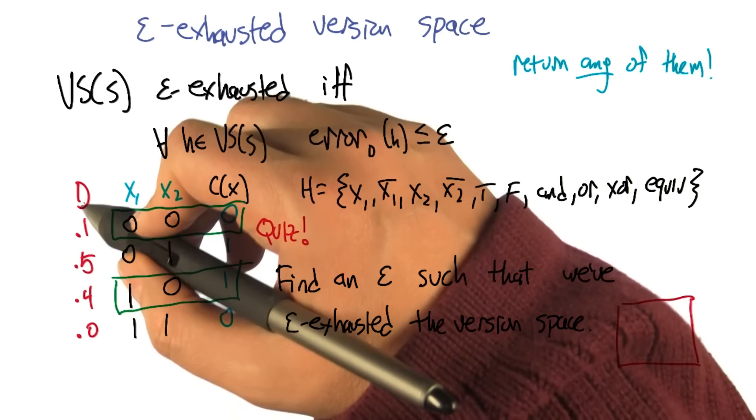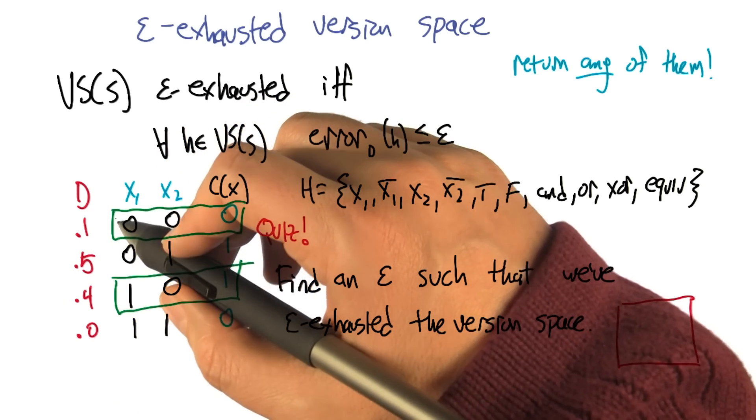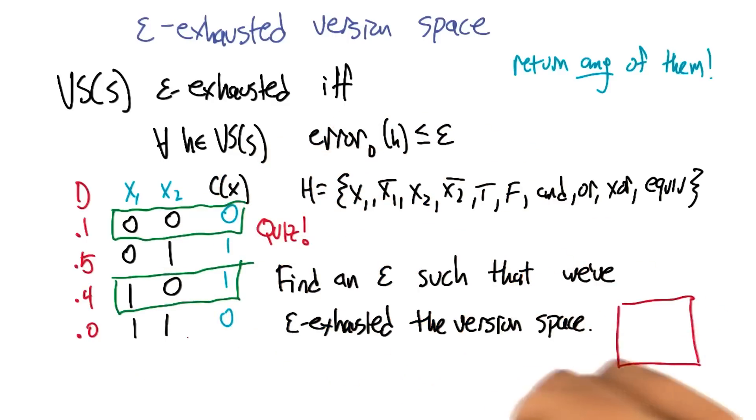And this time I'll actually write down a distribution D that gives the probability of drawing each of these different input examples.